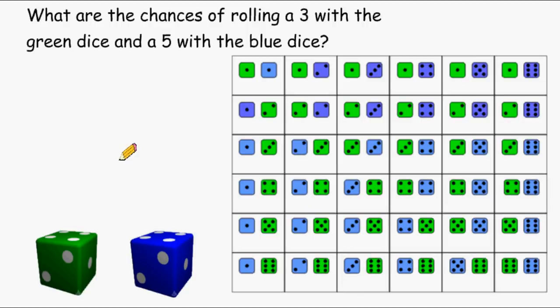Now in theory, if we roll this pair of dice 36 times, we can expect an outcome of a green 3 and a blue 5 one of those 36 times. So let's roll this pair of dice 36 times and see if we can come up with a green 3 and a blue 5 one time.